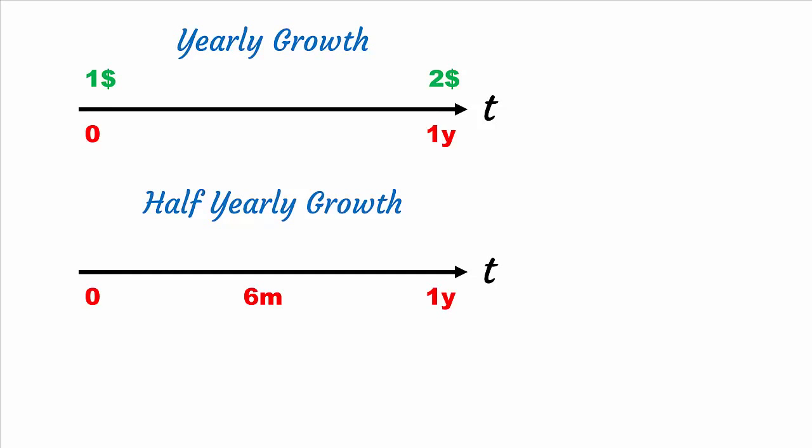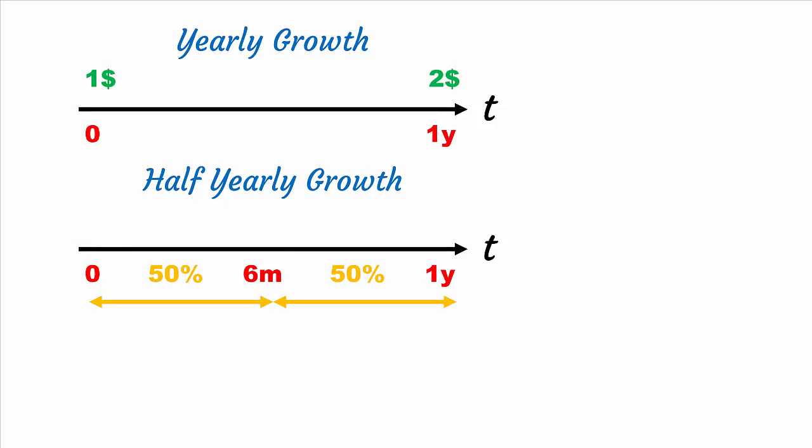In order to find the growth rate in between the year, let us calculate half-yearly growth. We divide the year into two halves. We assume 50% growth takes place during the first six months; another 50% growth takes place in the next six months.